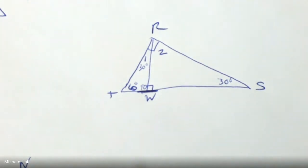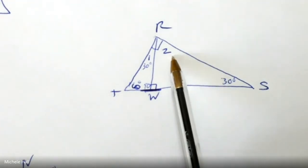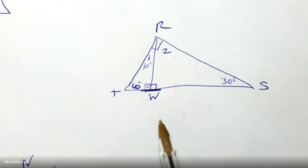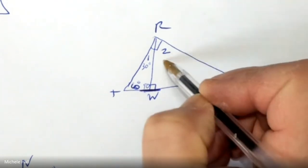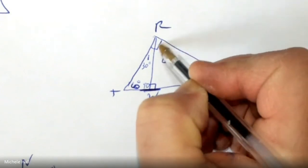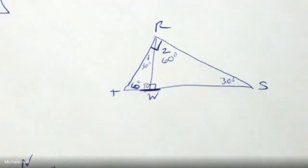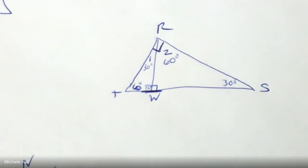So we did 180 minus 90 is 60, minus 30 is 30. When I said 30, the first thing I saw was that angle 1 plus angle 2 is supposed to be a right angle. Is it? 30 plus 60 is 90 — that right angle. Good.